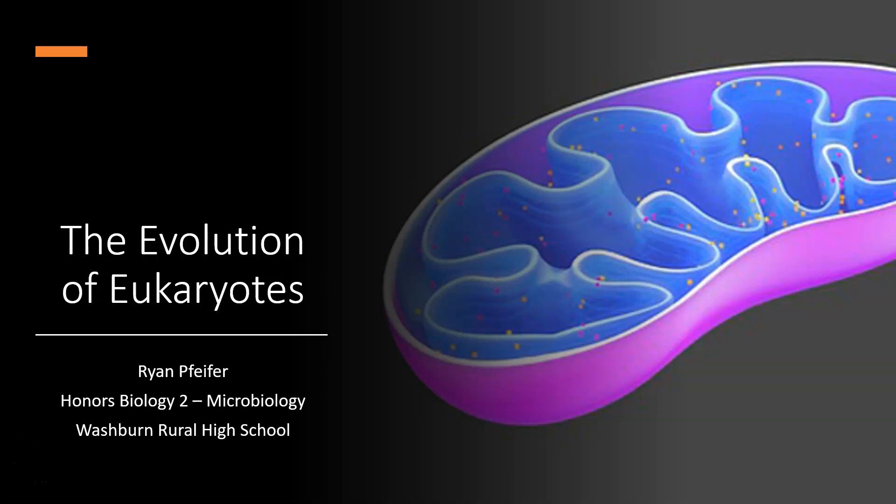Hey, Mr. P here. This video is all about the evolution of eukaryotes. We're going to talk through the endosymbiotic theory, discuss the structural adaptations of our energy organelles — specifically the mitochondria and chloroplast — why they have those structural adaptations, how those structural adaptations are believed to have arisen, and a timeline of events to help us understand how the endosymbiotic theory came about. This is going to be a really short video, so let's go.